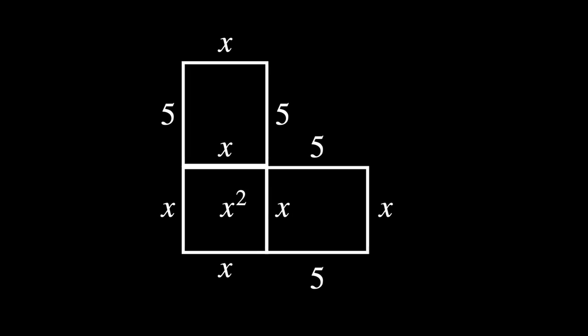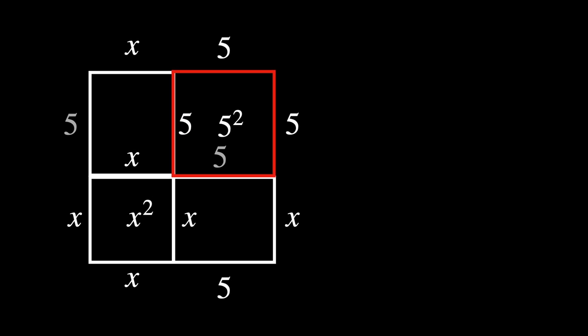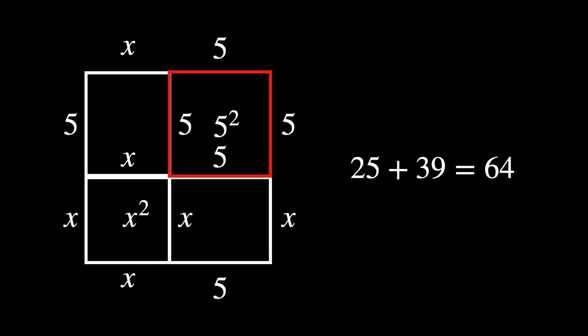Al-Khwarizmi used the empty space to create another square. This time, all the sides are equal to 5. The area of this square would be 5 squared, meaning that now we have one large square with an area of 25 plus 39, in total adding up to 64.